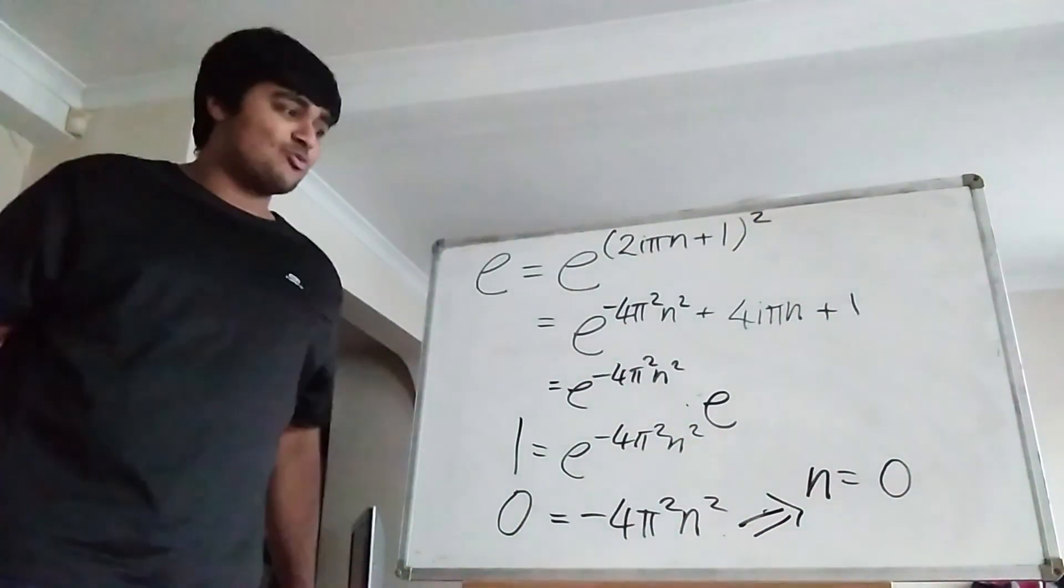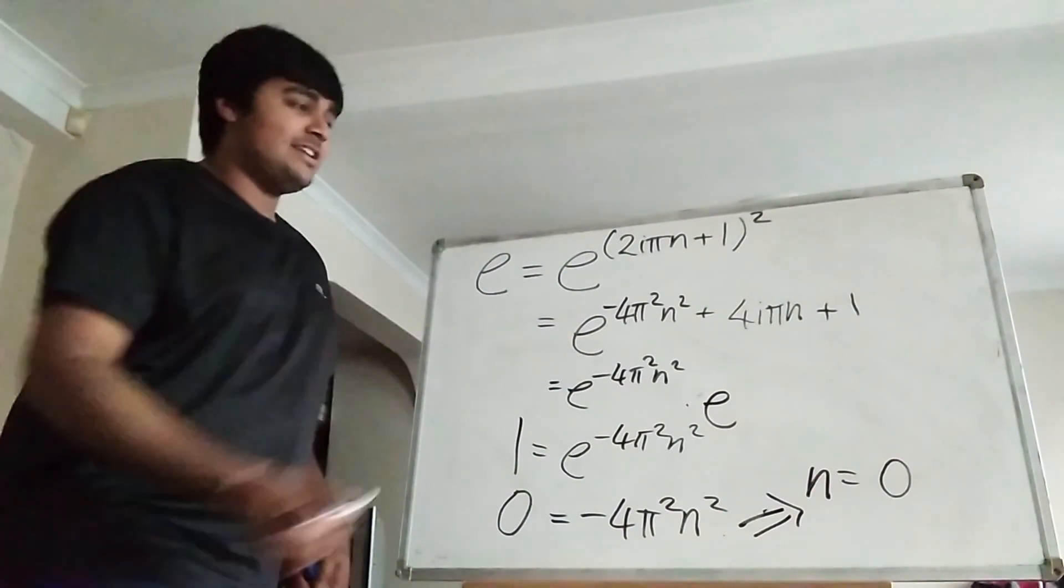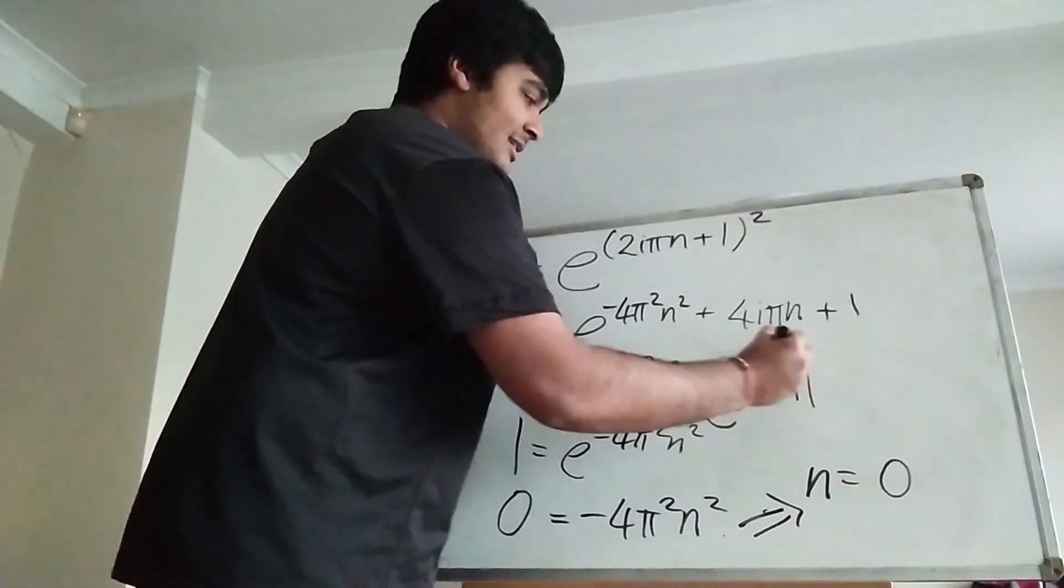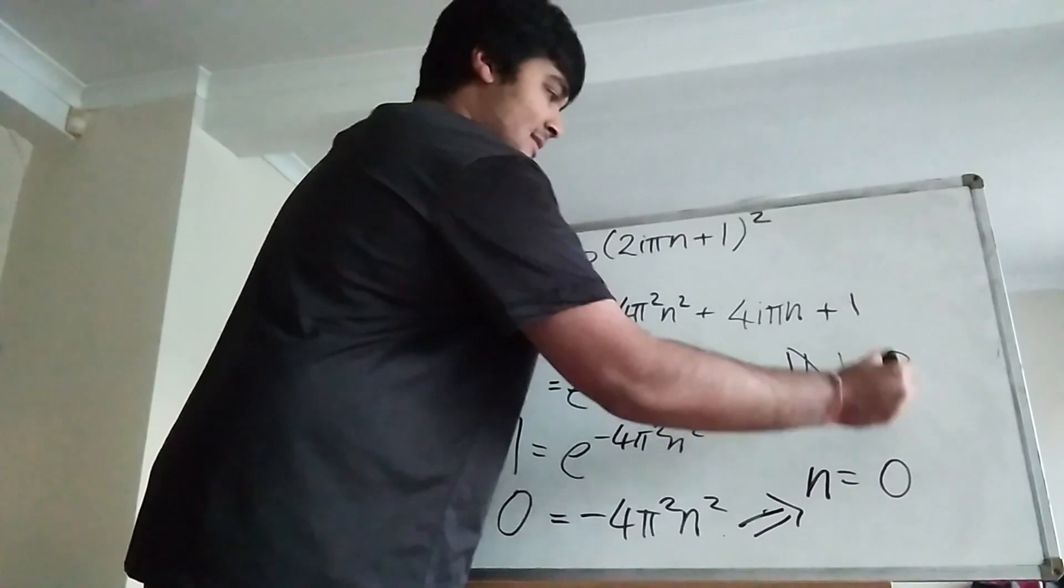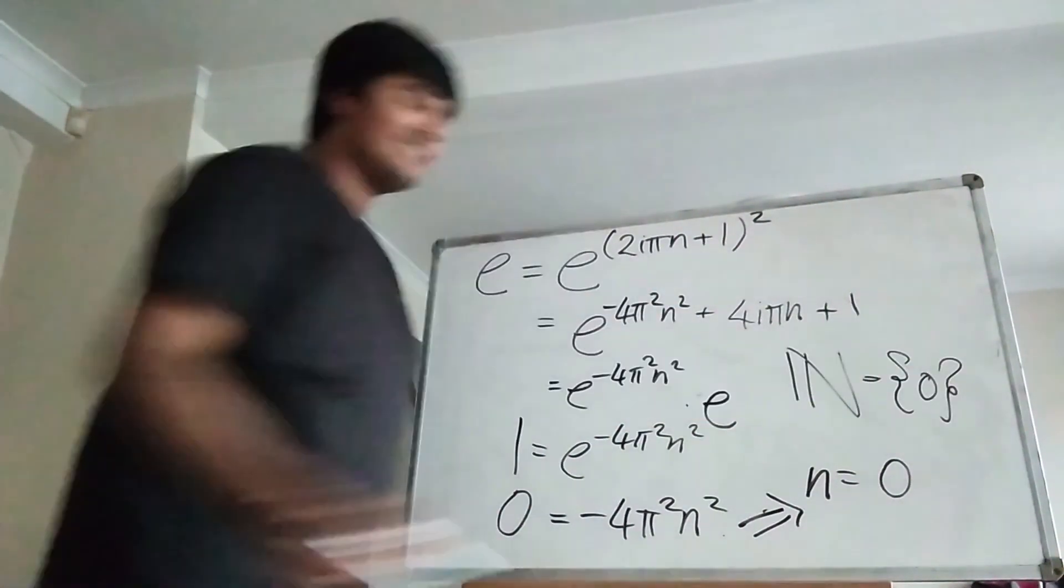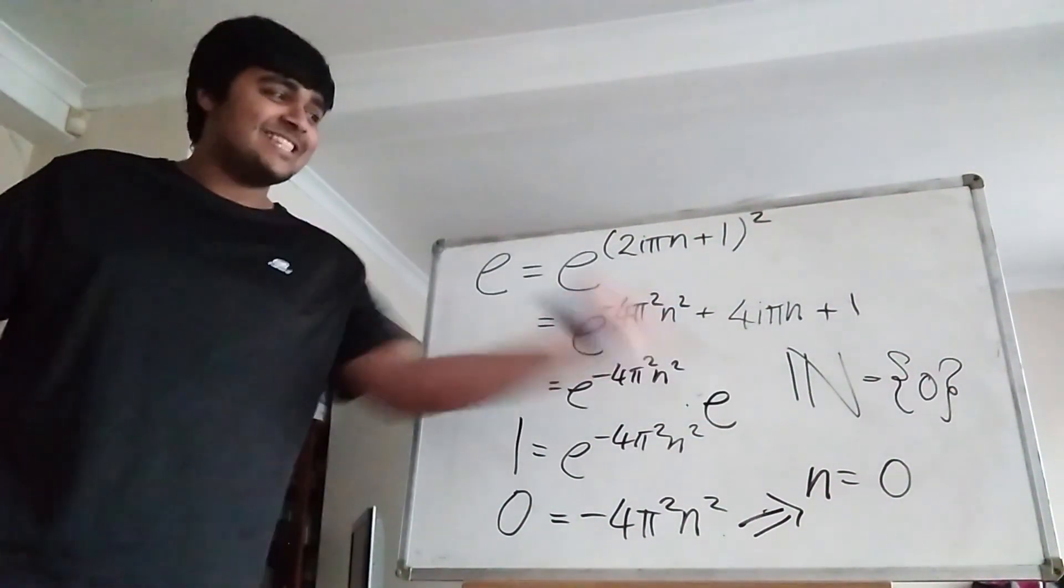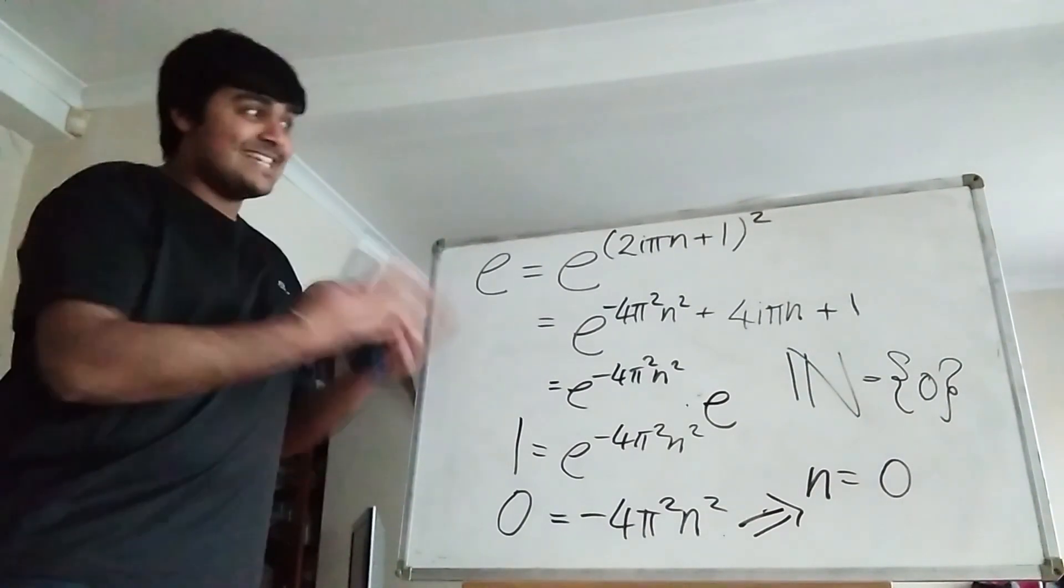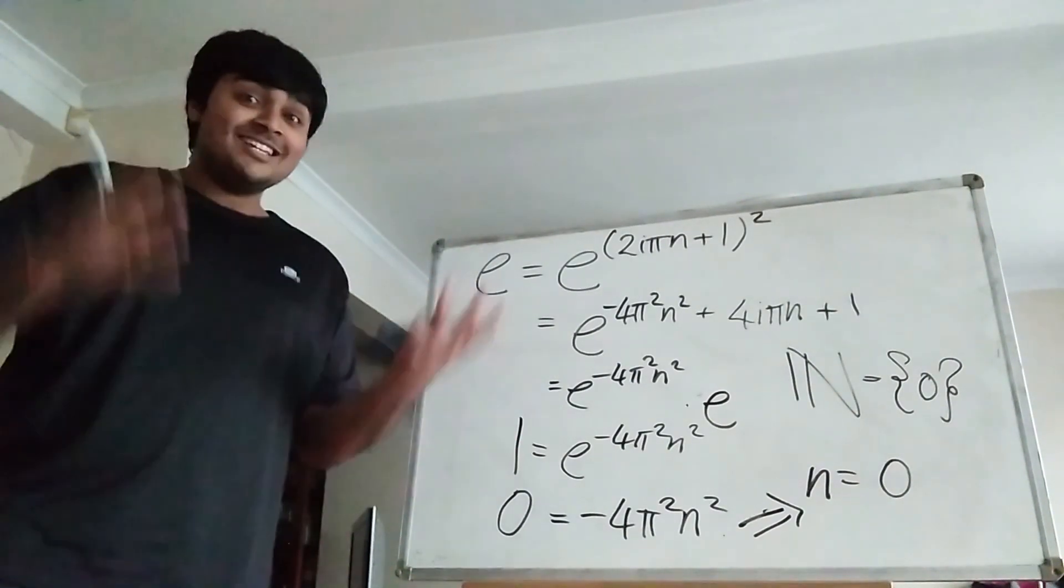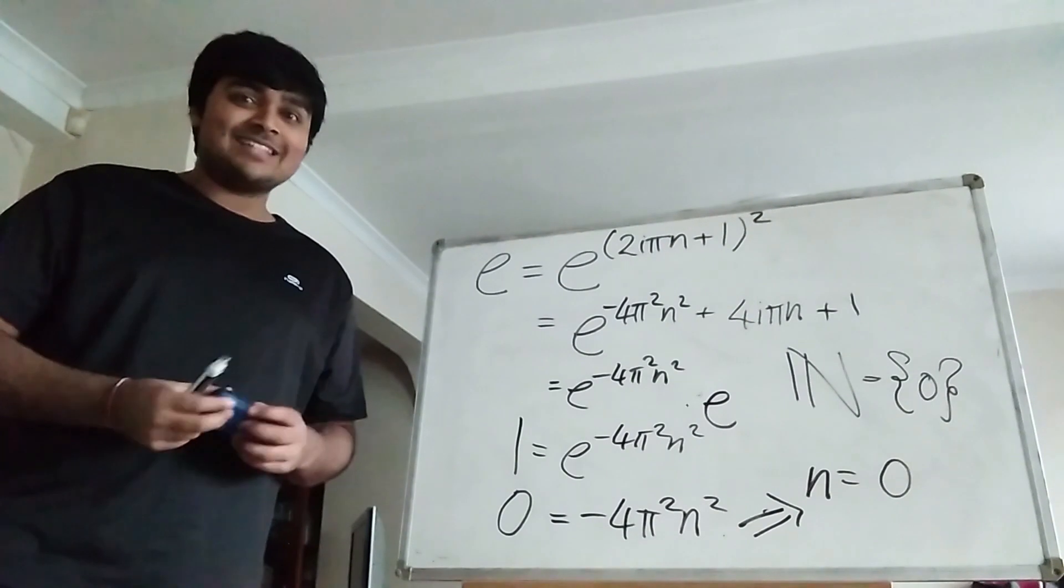And of course, n was just an arbitrary natural number, so this argument holds for every natural number, and then we can conclude that the set of natural numbers equals 0. But, of course, this result is absurd. So where was the mistake in this proof? Did you spot it? If you did, let me know in the comments down below.